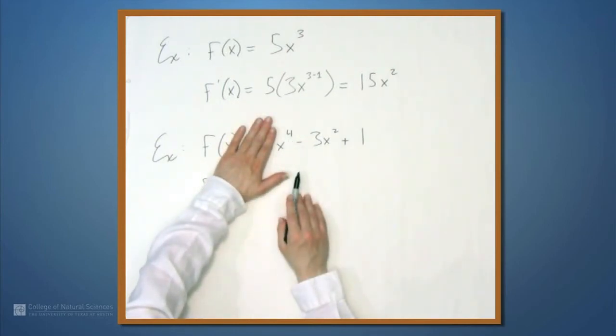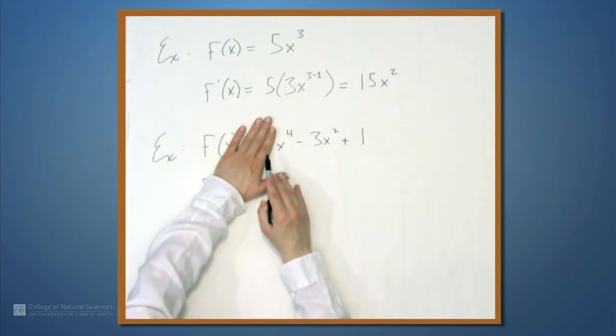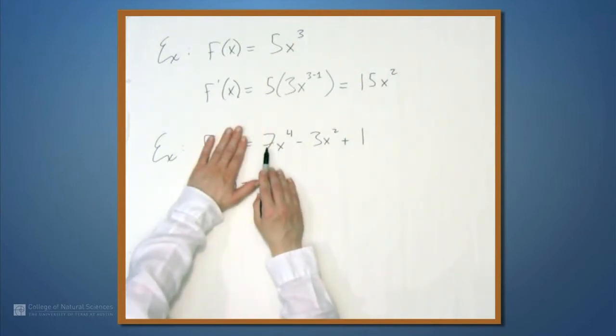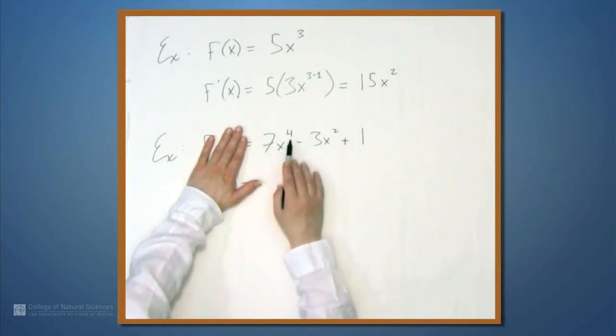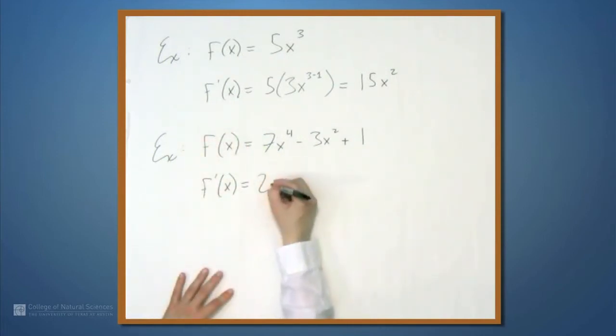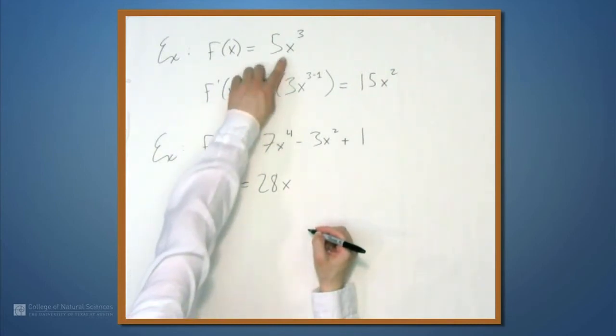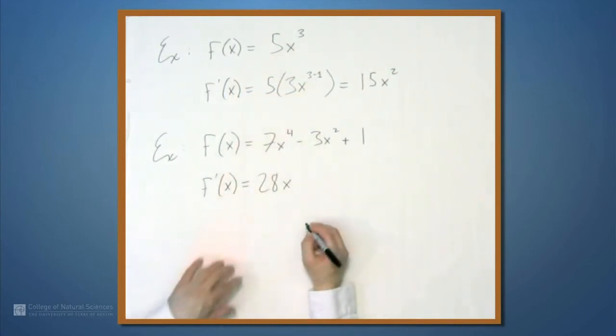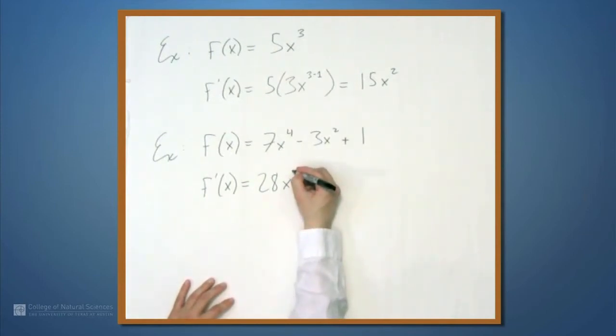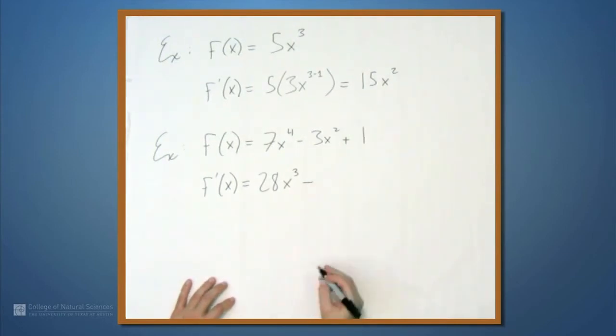When we differentiate x to the 4th, the 4 comes down out front, and the 7 stays around. So just like here we had 5 times 3, here we're going to have 7 times 4. So we get 28, and then x to the 4 minus 1. Just like we had x cubed became x to the 3 minus 1, here we have x to the 4 minus 1, which I'll just write as 3.